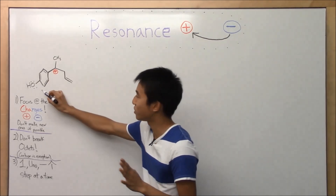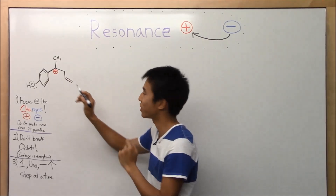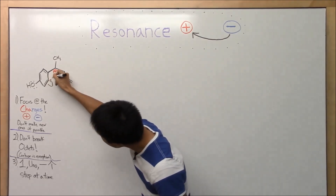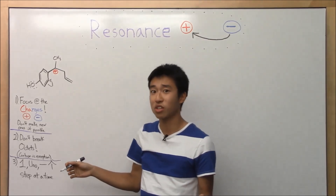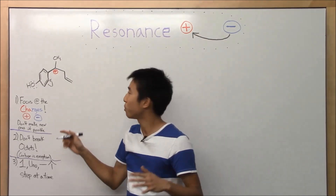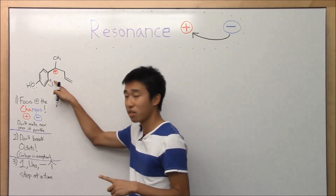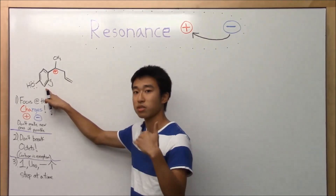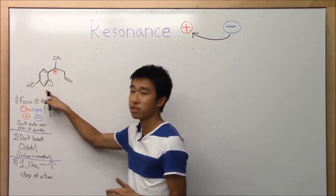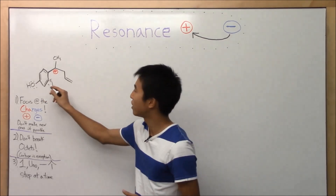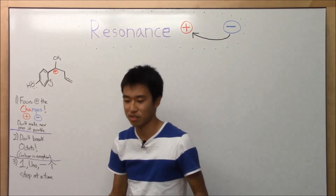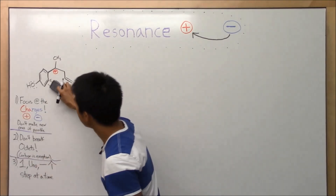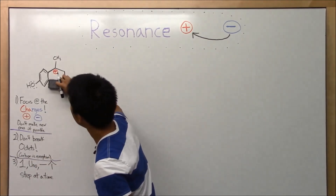Do not move bonds here when you have a positive charge here — and do not do this. Some students think that's a reasonable resonance structure, but no. Because by doing that, you create a negative charge here because the carbon gets electrons, and you create a positive charge here because the carbon lost electrons. That's not allowed — you can't do that and not affect anything else. Double-check your notes, but that is not a reasonable resonance structure.